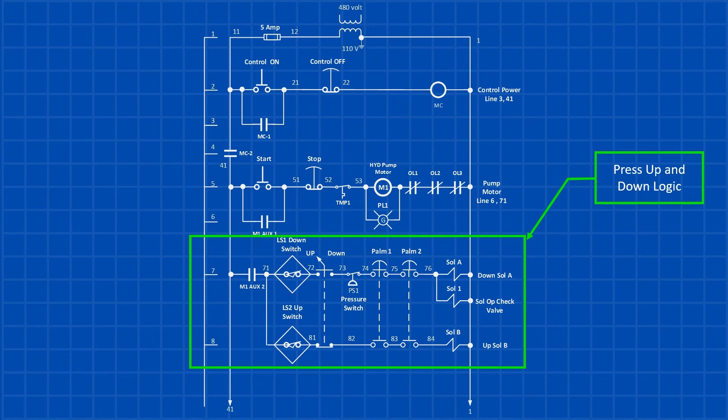Let's break down the press up and down logic. First, auxiliary contact 2 for the pump motor must be closed, meaning the pump is running for any movement to occur. For the press to move down, the press down switch must be inactive, as indicated by the normally closed press down proximity switch. Additionally, the up-down selector switch needs to be in the down position, and the press should not have reached the high pressure limit, which is monitored by a normally closed pressure switch.